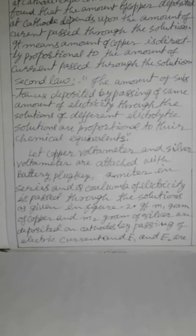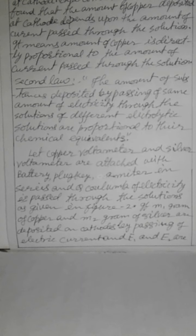Second Law: The amount of substances deposited by passing the same amount of electricity through the solutions of different electrolytic solutions are proportional to their chemical equivalents. Let a copper voltameter and a silver voltameter be attached with a battery, plug key, and ammeter in series, and q coulombs of electricity is passed through the solution as given in Figure 2.